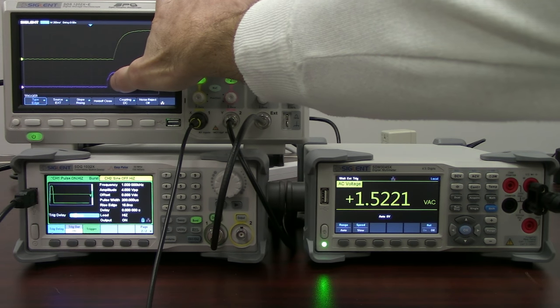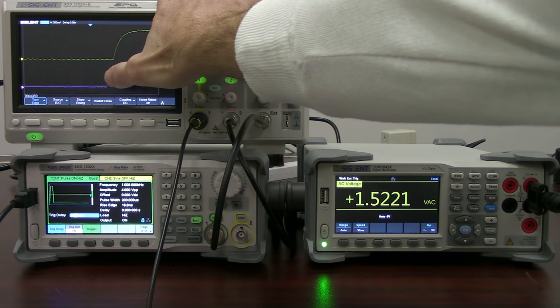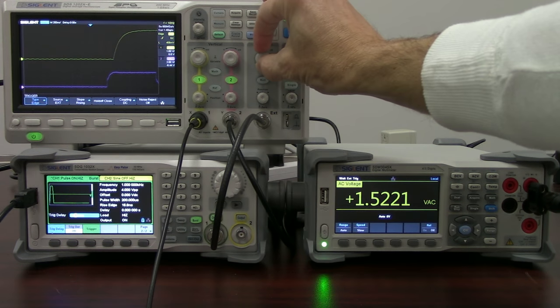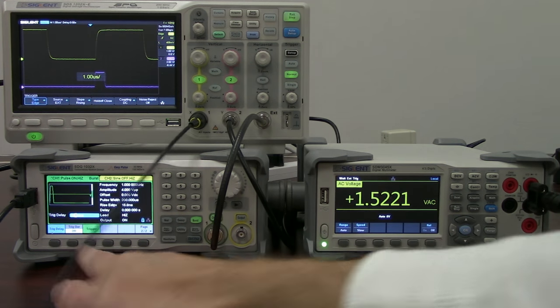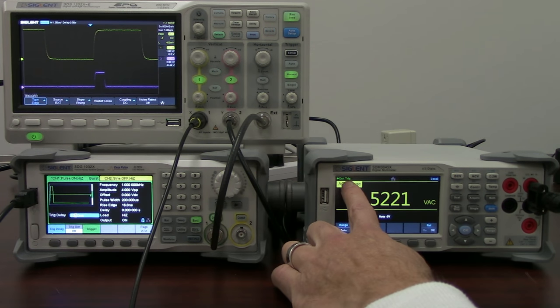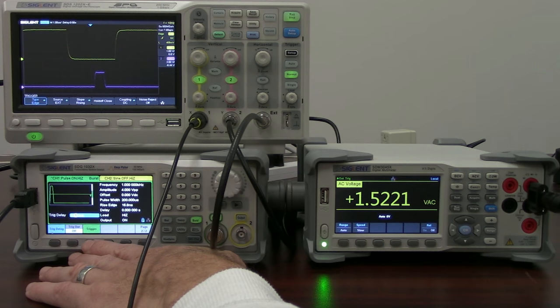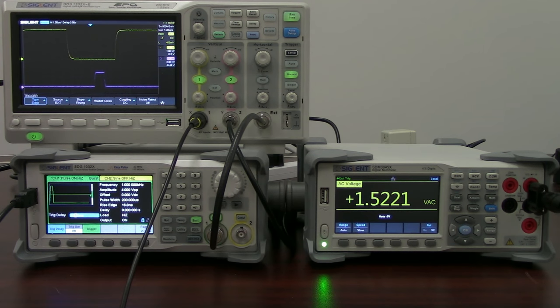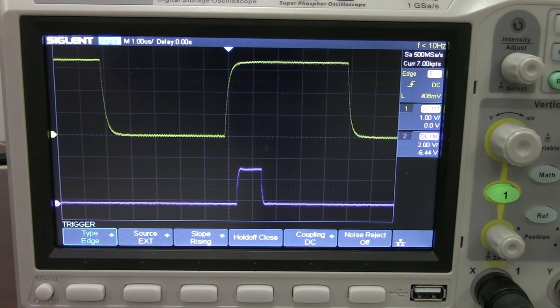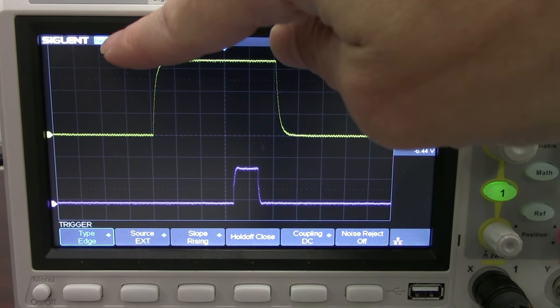So we're at about 375 nanoseconds of delay. So that is something that you're going to want to keep in mind when you're making those measurements. I'll perform that again pressing the trigger button. You'll see we actually get an external trigger here. And you can see that indicated by the trigger indication up at the top of the screen here on the scope.